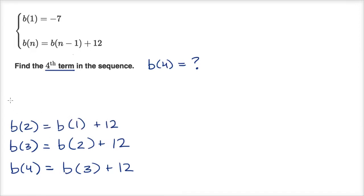We don't know what b(1) is, so let's figure that out. Here we can finally use the top clause: b(1) equals negative seven.